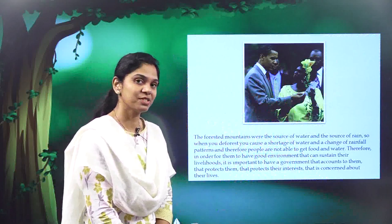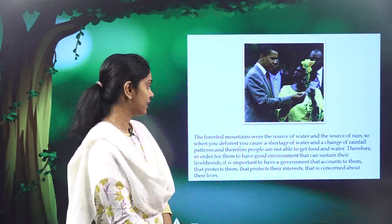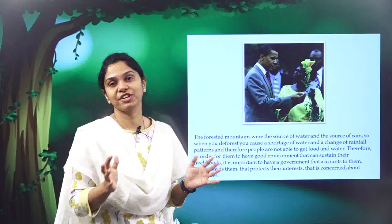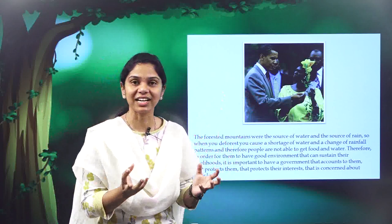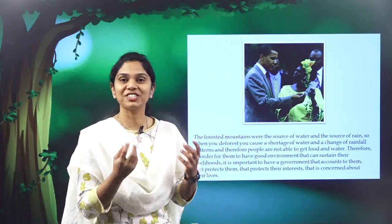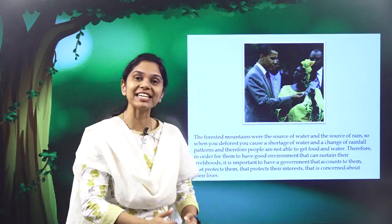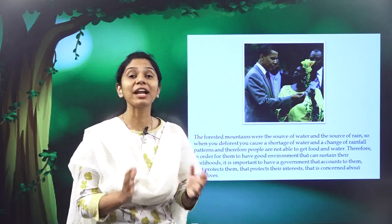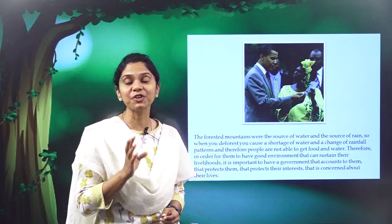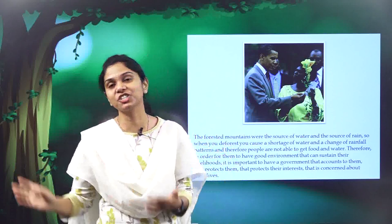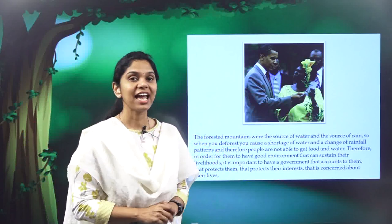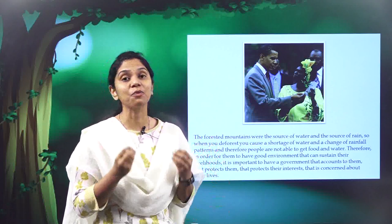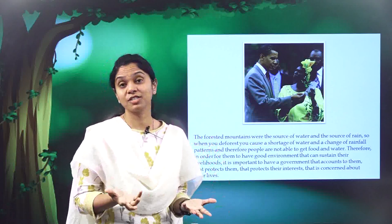The forested mountains around the area in Kenya were the source of water and rain. Forests attract rain clouds, and once there is rain, the forest trees trap the rain and make it sink into the soil. But when you chop down forests, there are no rain clouds, and even if there is rain, the water doesn't seep into the soil — it gushes off and joins a sea or ocean. The local people and animals in that area do not get any water, food, or chance of irrigation.